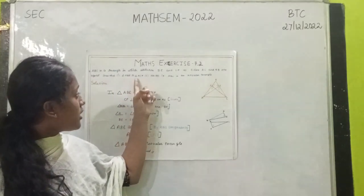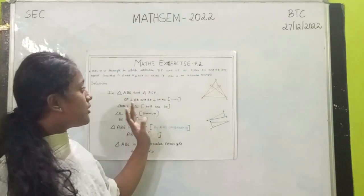Show that triangle ABE is congruent to triangle ACF. AB is equal to AC.